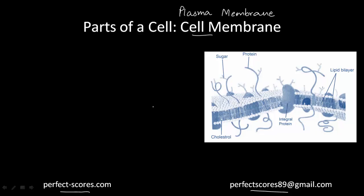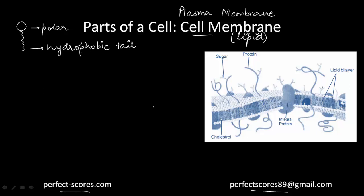Both terms — cell membrane and plasma membrane — mean the same thing. Studies on red blood cells showed that the cell membrane is composed of lipids arranged in a bilayer — two layers. The lipids are arranged with the polar head towards the outer side and the hydrophobic tail towards the inner part. So in a lipid bilayer, the polar heads are towards the outside and the hydrophobic tails are towards the inside.